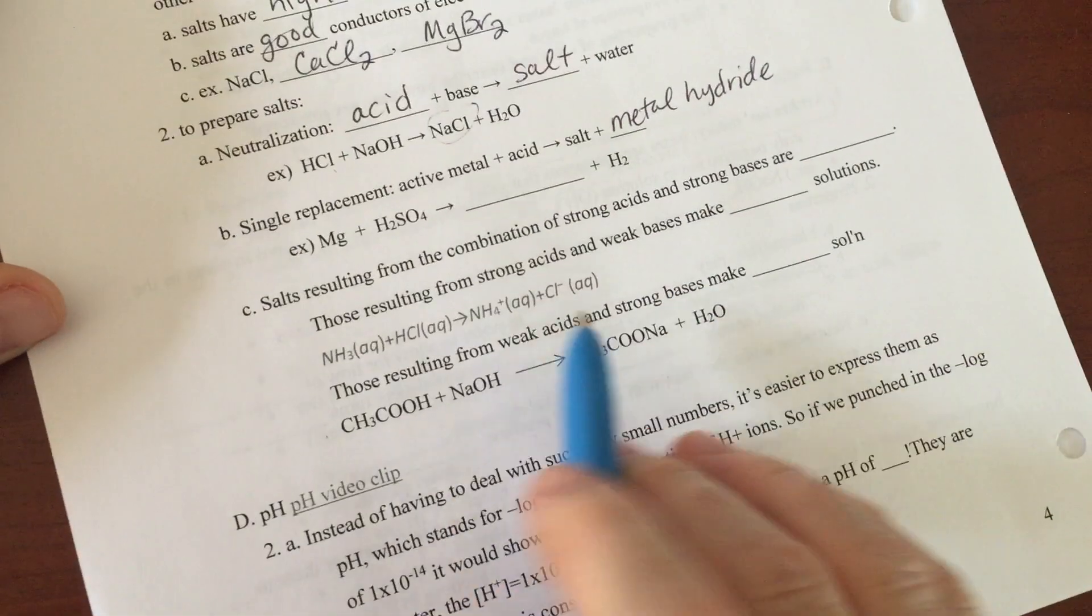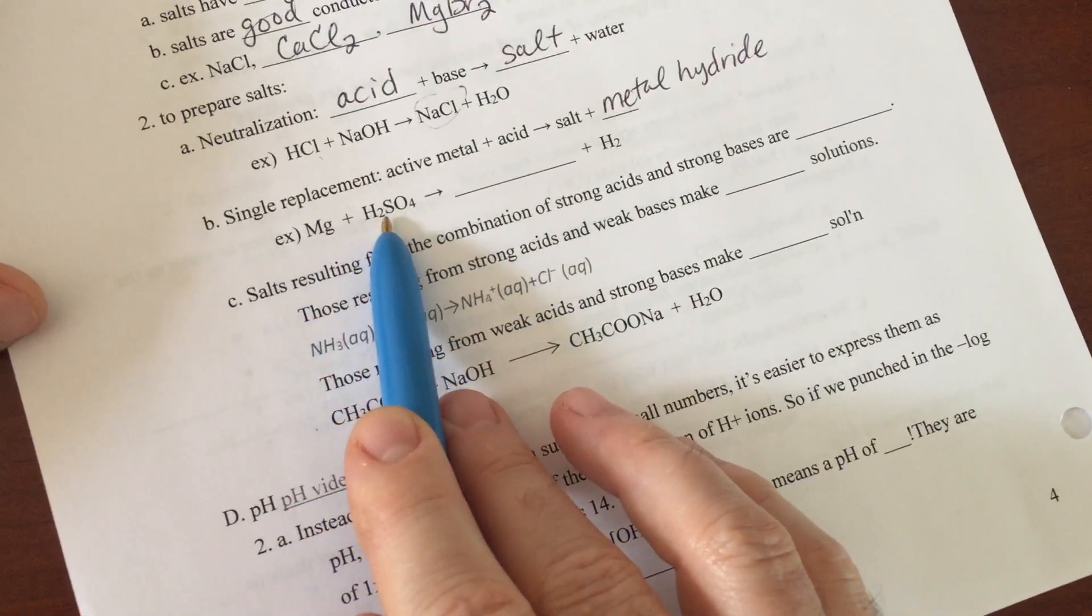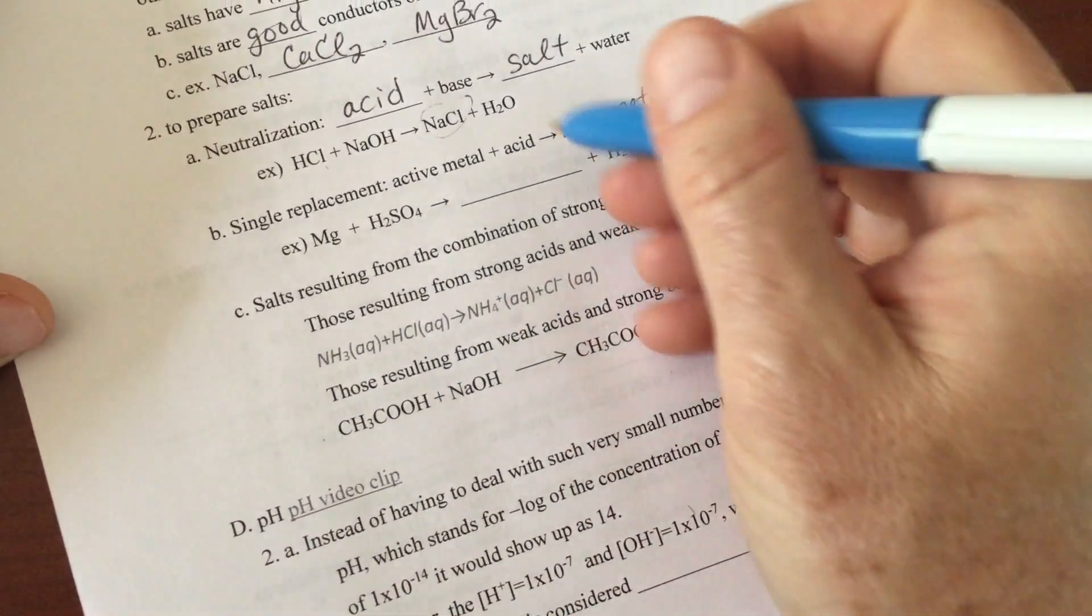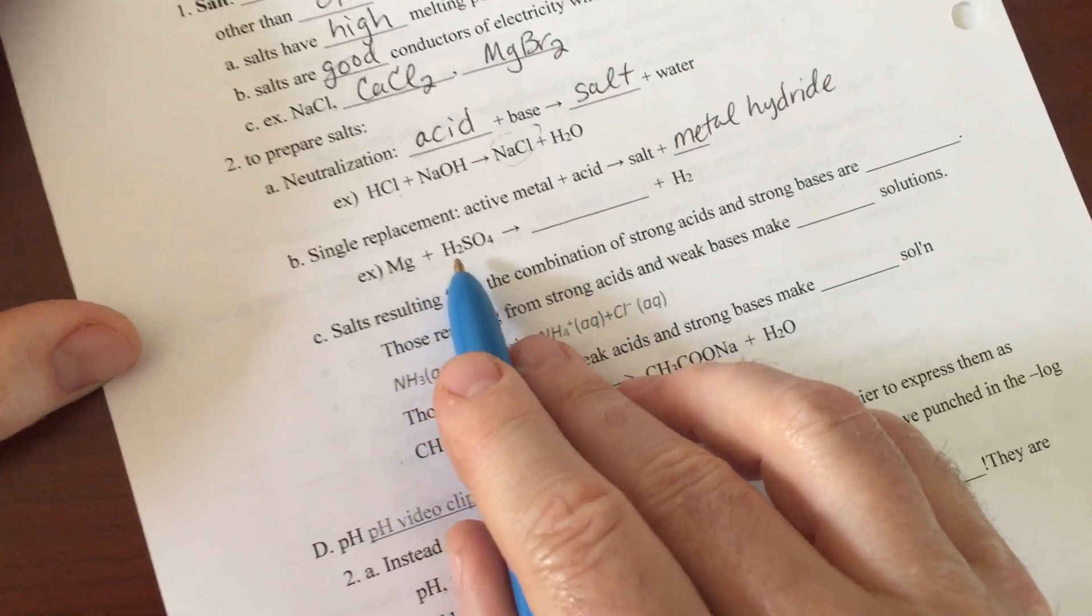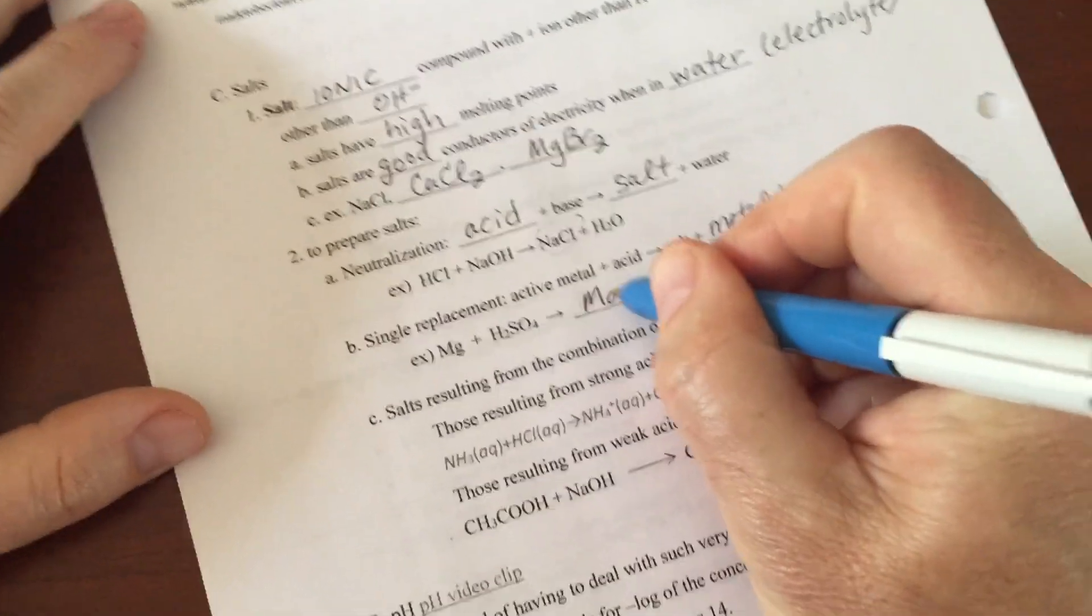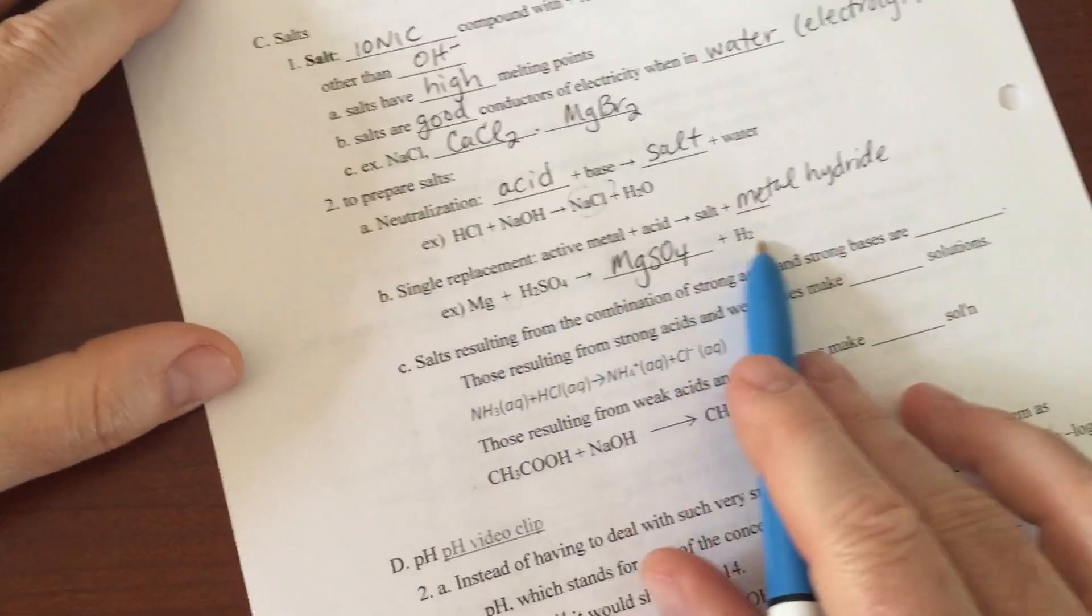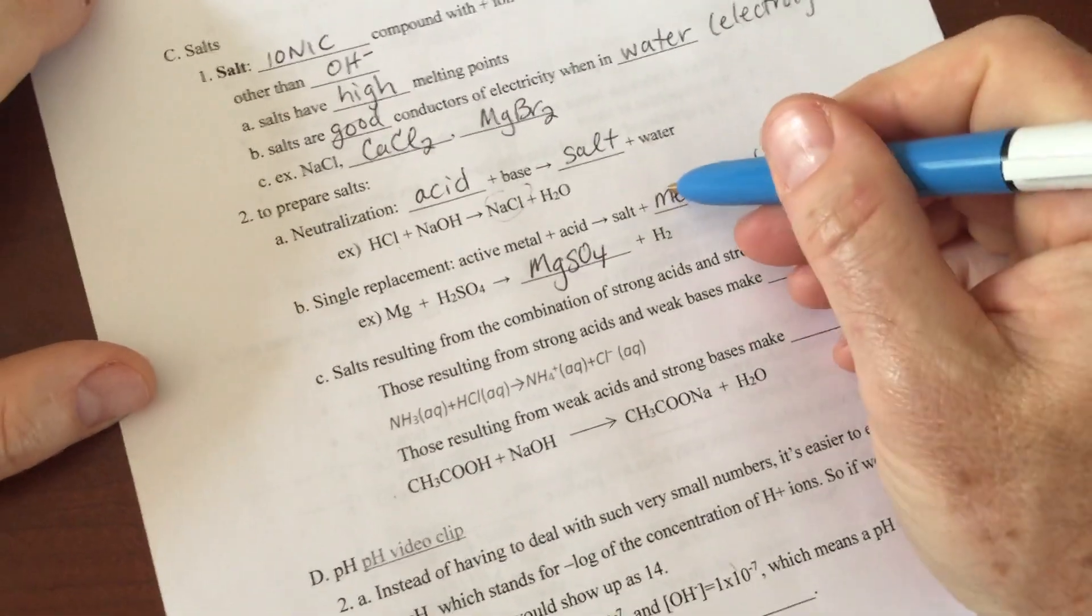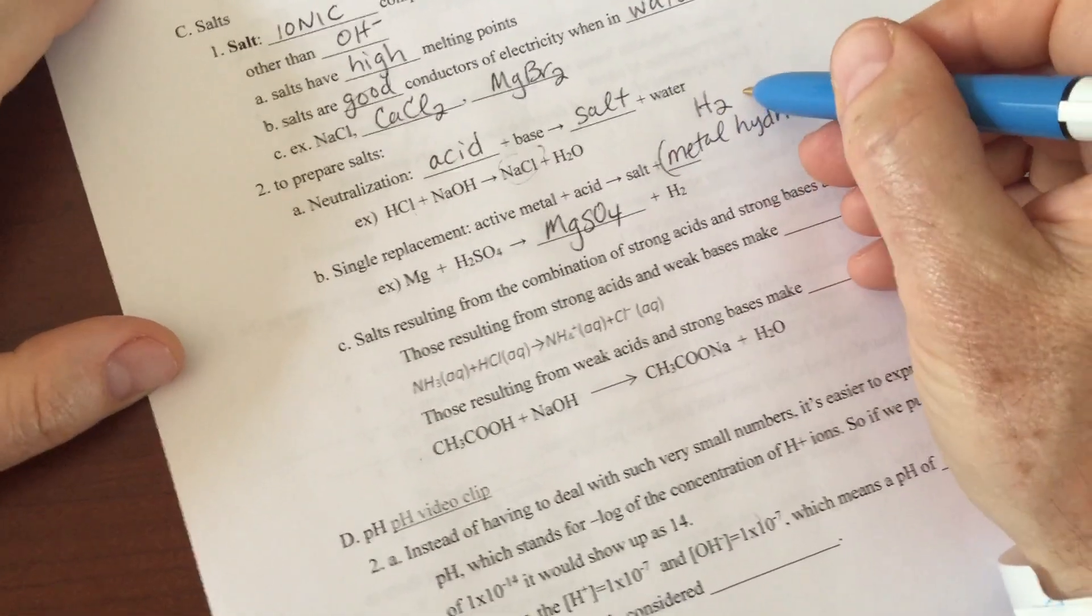For example, magnesium plus sulfuric acid. You get the salt. In this case, the magnesium is just going to kick out the hydrogen and combine with the sulfate, and then it kicks out the hydrogen. So for the most part, sometimes you get a metal hydride, but most of the time you're going to get hydrogen gas, and then you can see that bubbling up, right?